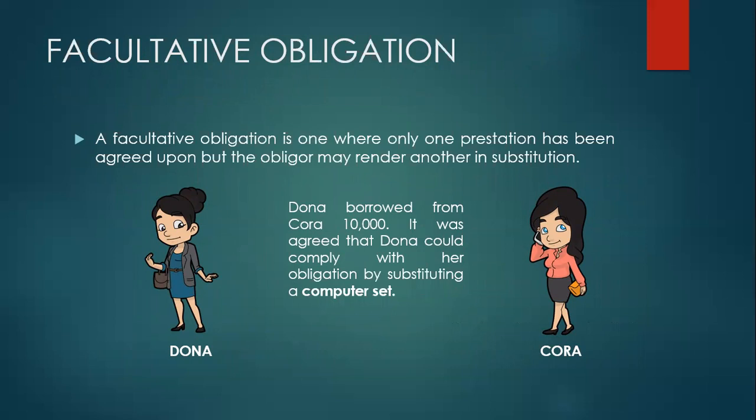Now our last topic for this video is the facultative obligation. What is a facultative obligation? It is one where only one prestation has been agreed upon but the obligor may render another in substitution. The keyword here is substitution. For example, Donna borrowed from Cora 10,000 pesos. It was agreed that Donna could comply with her obligation by substituting a computer set. So take note: only one prestation has been agreed upon, which is the 10,000 pesos, but accordingly Donna could substitute a computer set.